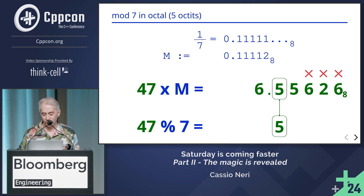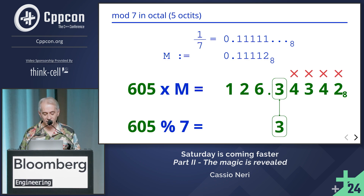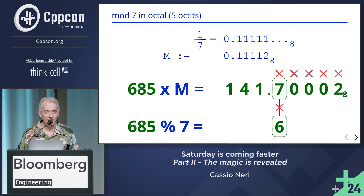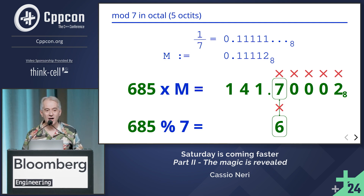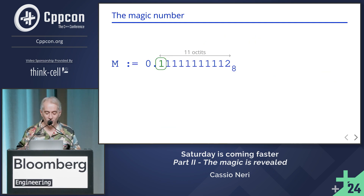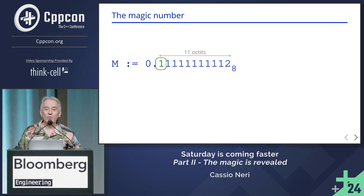Let's go — you know how it's going to end. It went up to 685. And we know how to enlarge the range for which the first octet after the dot matches the modulo — we just need more octets. I suggest taking 11, and I'm highlighting the important one because it's from there that we are going to extract the modulo.